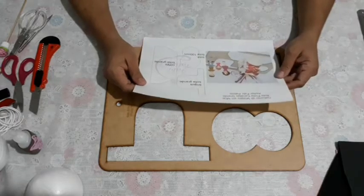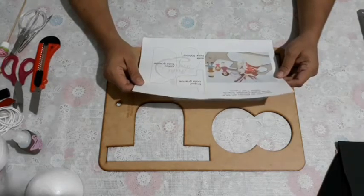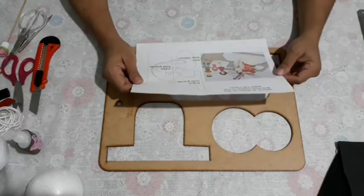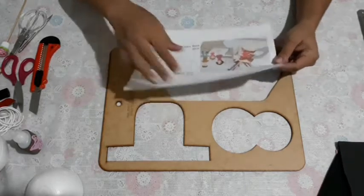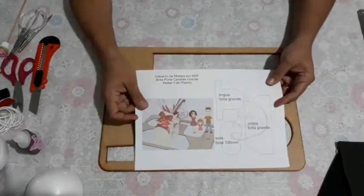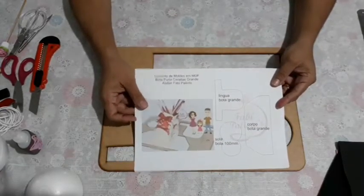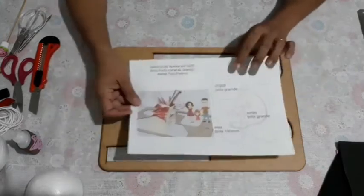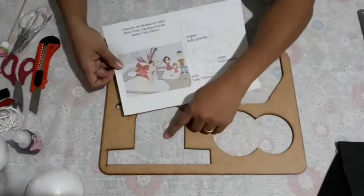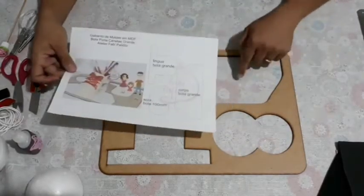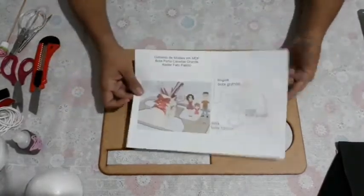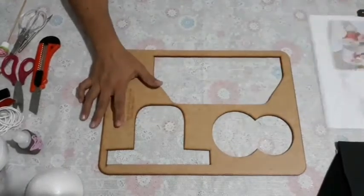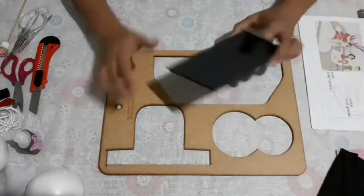Olá pessoal, tudo bem? Aqui é a Maristela, do Artista Maristela. Vamos fazer mais uma aulinha usando os gabaritos de moldes MDF da Fabi Pagliotti. Nós vamos usar aqui a bota porta-canetas grande, que consiste nessa folha para identificar as partes do gabarito: a língua, que é essa parte aqui, a solinha e o corpo da bota. É bem fácil de fazer e bem prático com todos os gabaritos da Fabi. Vamos começar aqui pela sola.